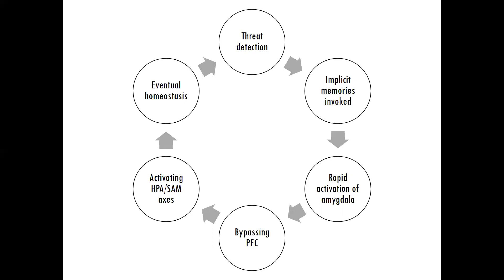And those hormones — cortisol, adrenaline — lead to a lesser ability for a person to think before acting. So it bypasses the prefrontal cortex, and then eventually the person returns to homeostasis, but it can take a while. We'll talk about why it is that a person does not return to baseline quickly after they've been activated.